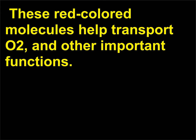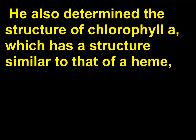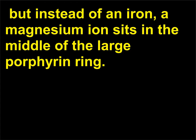He also determined the structure of chlorophyll A, which has a structure similar to that of a heme, but instead of an iron, a magnesium ion sits in the middle of the large porphyrin ring.